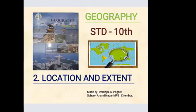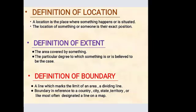Before we start, we will review what we studied in the previous lecture. We studied the definitions of location, extent, and boundary. Location is the place where something happens or is situated. Extent is the area covered by something or the particular degree to which something is believed to be. Boundary is the line which marks the limit of an area — a dividing line most often designated on a map.